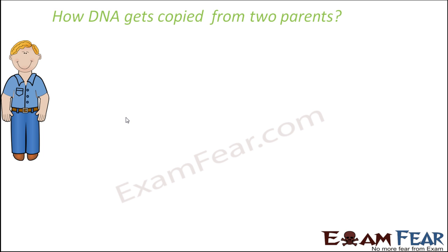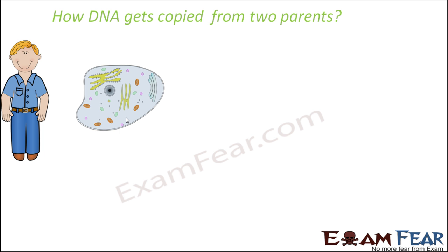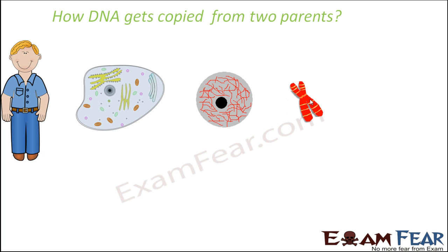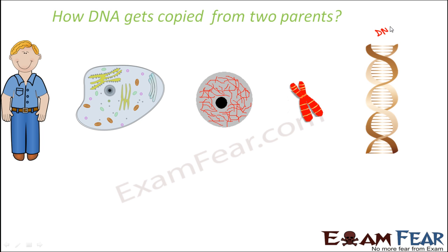Before we understand how DNA gets copied, let us first see where the DNA is present inside our body. The body is made up of cells, and inside the cell we have the nucleus. Inside the nucleus there are thread-like structures which are the chromosomes. If you magnify the chromosomes, you can see the genes — the yellow colored structures. And when you magnify the gene, you actually see the DNA. The DNA is made up of nucleotides — it is deoxyribonucleic acid.